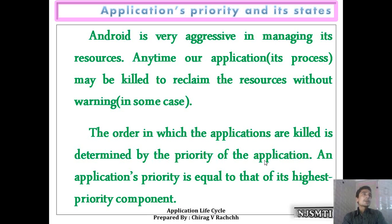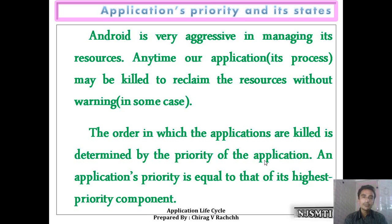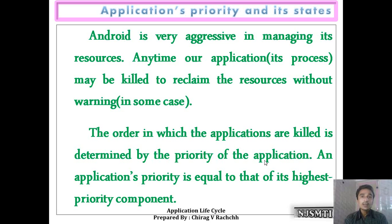For example, suppose the Android operating system's capacity is such that only five applications can run. If five applications are already running and the capacity is full, when a new application needs to run, the operating system itself decides which app to remove. It is based on priority — the application with higher priority continues to run.